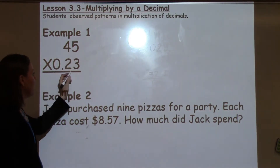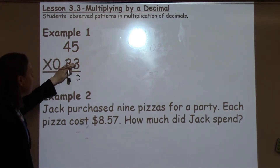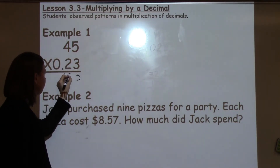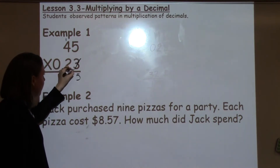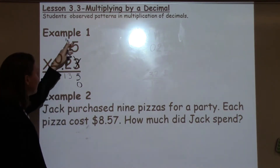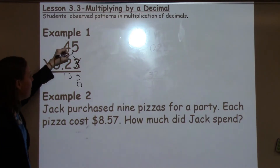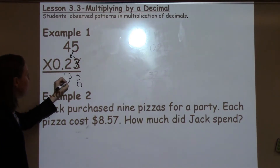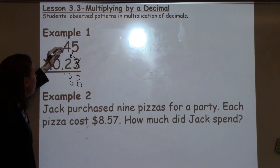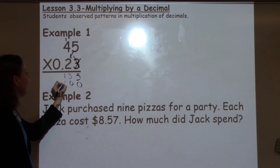5 times 3 is 15, carry my 1. 4 times 3 is 12, plus 1 more is 13. Cross off my 3 because I've already used it, put my 0 down as a placeholder because now I'm multiplying in the tens place. 5 times 2 is 10, carry my 1. 4 times 2 is 8, plus 1 more is 9.